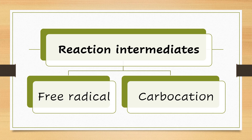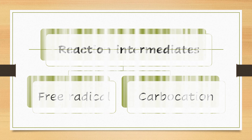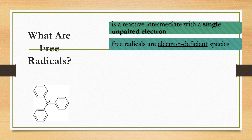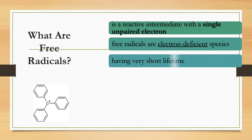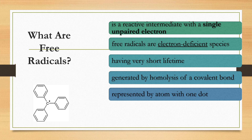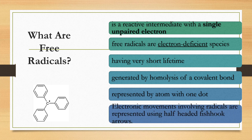Two species that act as reaction intermediates are free radicals and carbocations. A free radical is a reactive intermediate with a single unpaired electron, shown as a dot. Free radicals are electron-deficient species with a very short lifetime. They are generated by homolysis of a covalent bond, represented by an atom with one dot, and electronic movements involving radicals are shown using half-headed fish-hook arrows.